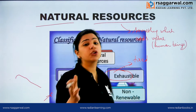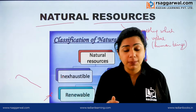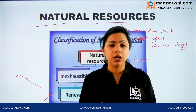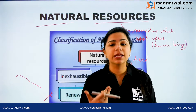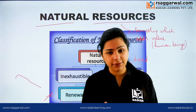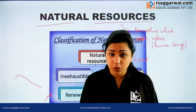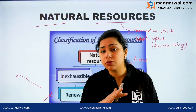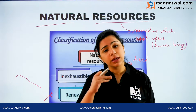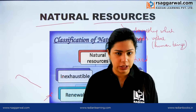Exhaustible resources are of two types: Renewable and Non-renewable. Renewable means something you can renew from time to time — it can replenish itself. And non-renewable means something you cannot renew; once it is finished, you cannot use it again.